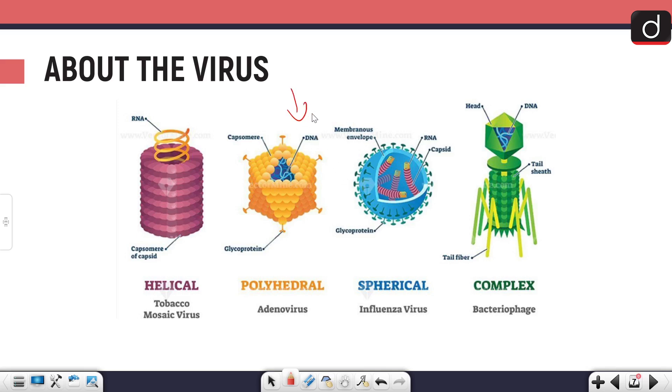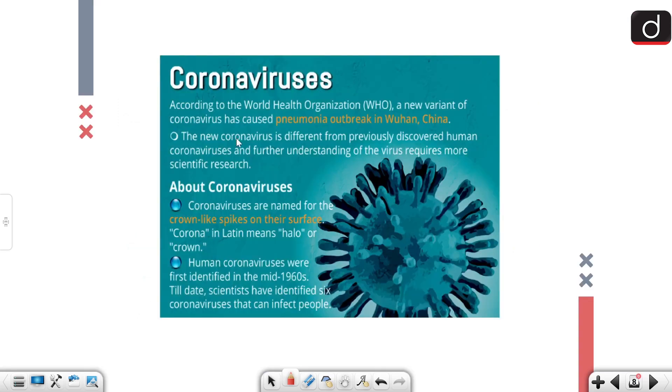According to the WHO, a new variant of SARS-CoV-2 caused the pneumonia outbreak in Wuhan, China. Many theories are being suggested recently that this was a lab leak, made to be used in World War III by the Chinese government. The new coronavirus is different from previously discovered human coronaviruses. Coronaviruses are named for the crown-like spikes on their surface - corona means halo or crown in Latin.